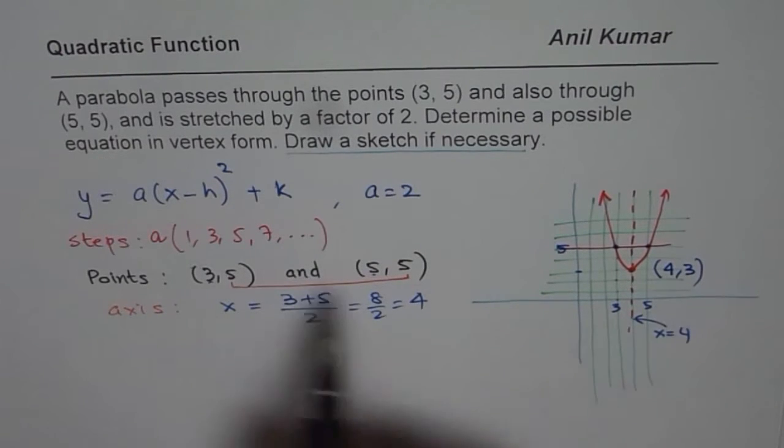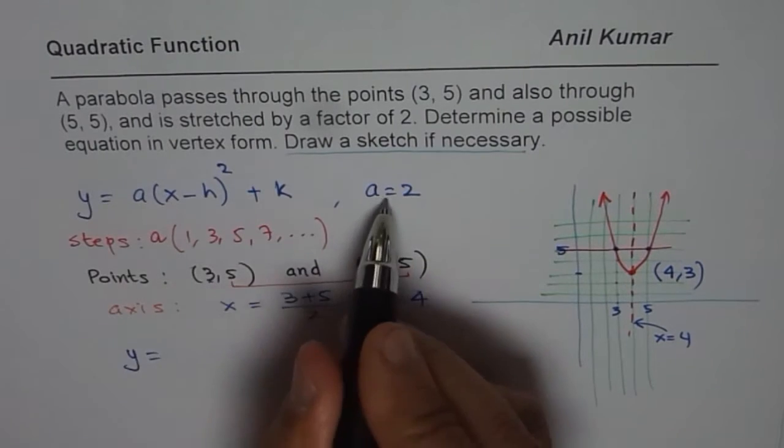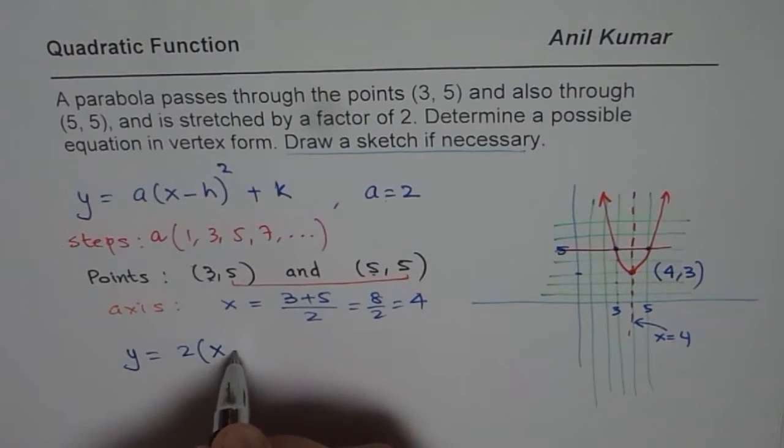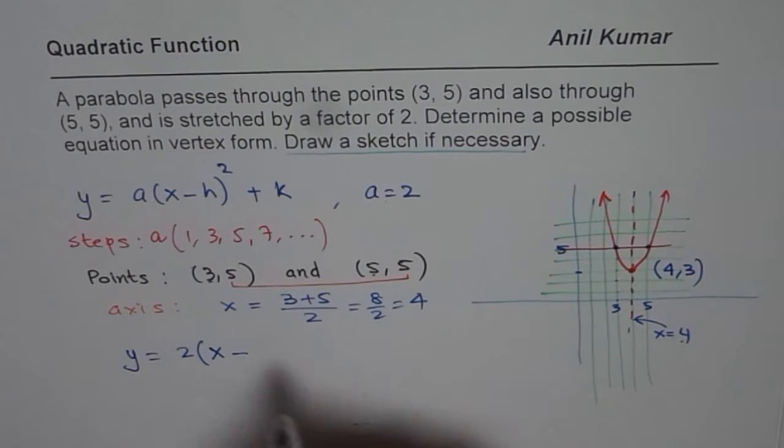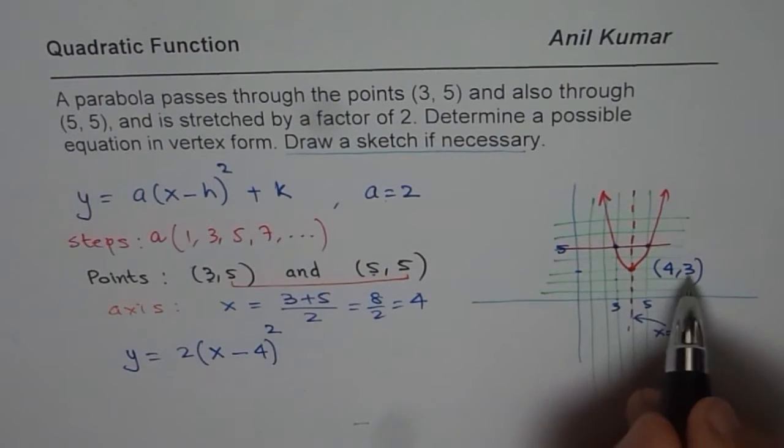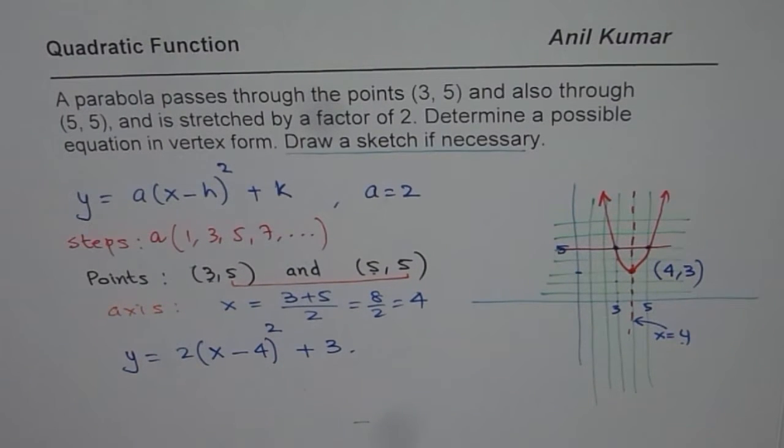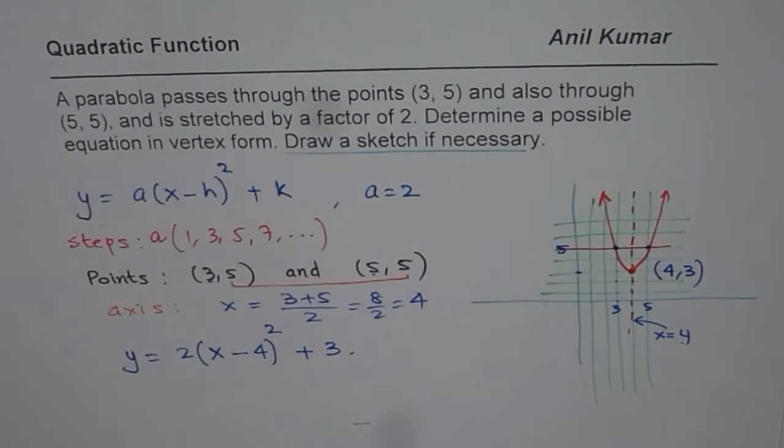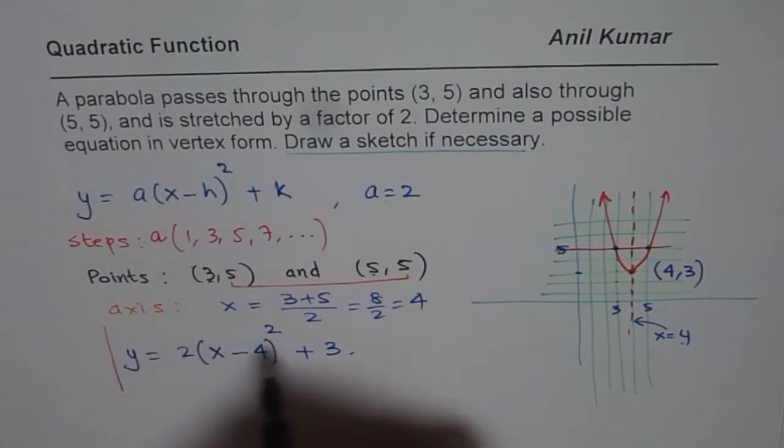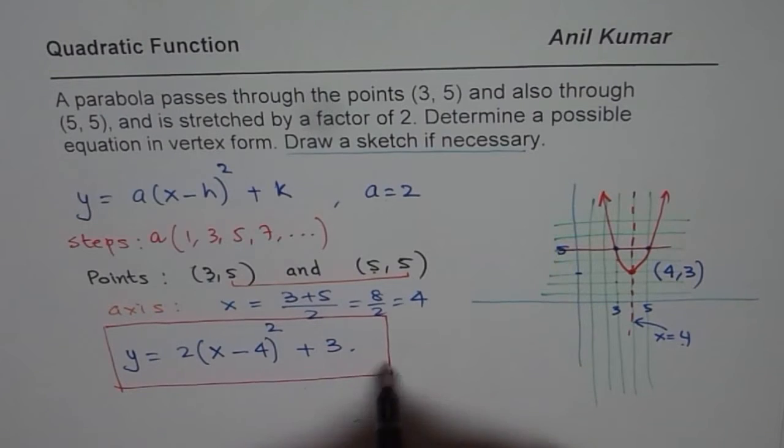Let me write down. The points given were (3, 5) and (5, 5). So, this is 3 for us and that is 5. x is 4 and that is 5. 2 units down means our vertex is at 4 and y value is 3. Do you get the idea? So, from here, we get our equation. Equation is y = 2(x - 4)² + 3. So, that becomes the equation.